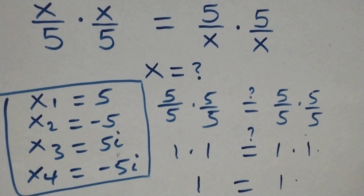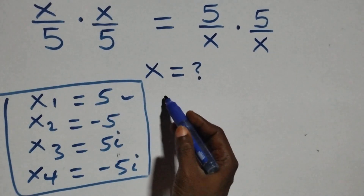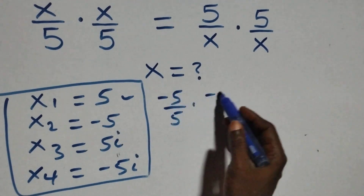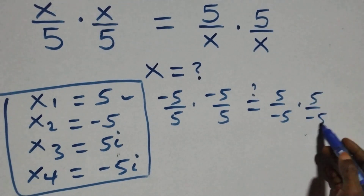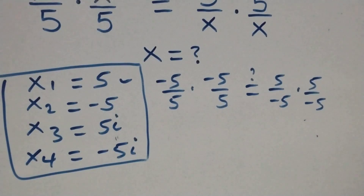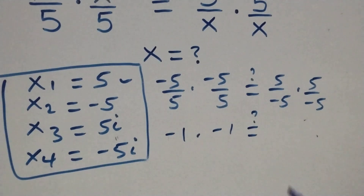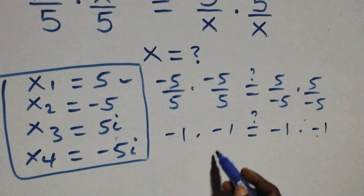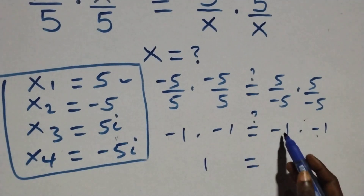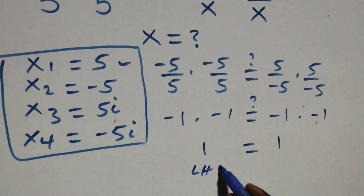x equals 5 satisfies the given problem. We also substitute x equals minus 5: this becomes minus 5 over 5 times minus 5 over 5, equals 5 over minus 5 times 5 over minus 5. That gives minus 1 times minus 1, equals minus 1 times minus 1. Minus times minus is plus, so 1 equals 1, and left hand side equals right hand side. x equals minus 5 satisfies the given problem.